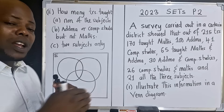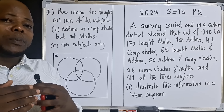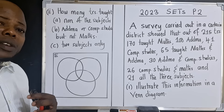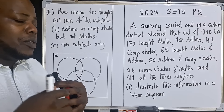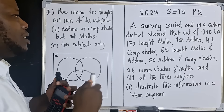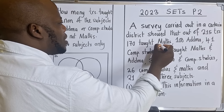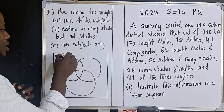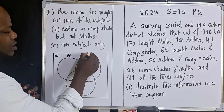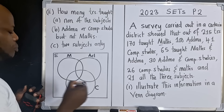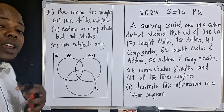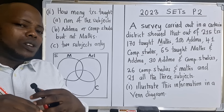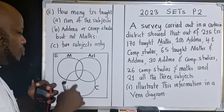In the exam you are not given a Venn diagram — this is paper two, so you need to come up with your own. Looking at the subjects mentioned, we have Mathematics, Additional Mathematics, and Computer Studies. We label each circle accordingly and then put in the information that needs to go inside.